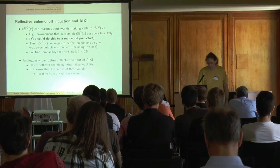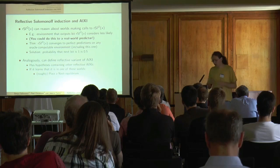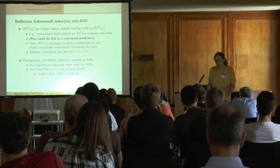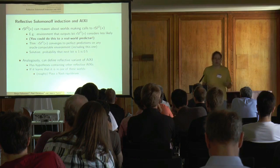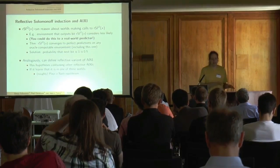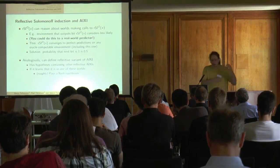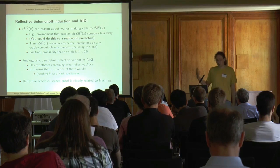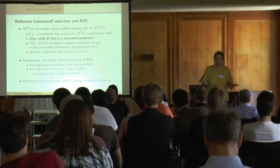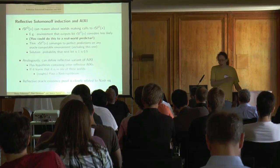Analogously, you can define a reflective variant of AIXI with hypotheses containing other reflective AIXIs — in particular, it can deal with worlds containing other agents like itself. If it learns it is in one of those worlds, it would roughly play a Nash equilibrium. It never knows exactly, so it's only approximate. In fact, the proof that reflective oracles exist is closely related to Nash equilibria — there's an AIXI-like construction and a version of reflective oracles that's AIXI-like, and existence is proved by finding a Nash equilibrium of a particular game.